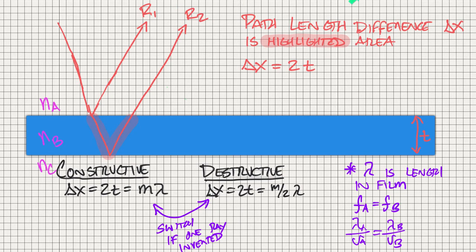This is looking at thin film interference, which is when we have the result of two reflections that occur from a thin film. This is going to be our incident ray right here. It's going to hit the boundary here and create reflection one. Some of it is going to go into the film.